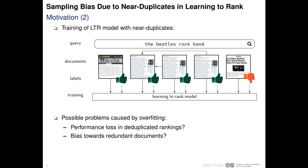Hence, near-duplicates in the ground truth data used during training of learning to rank models may cause overfitting.